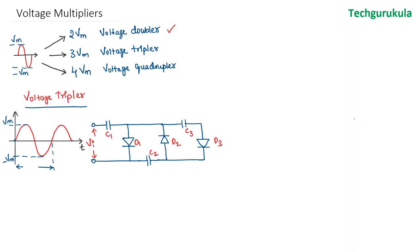Let's start with the voltage tripler, whose circuit diagram consists of 3 diodes and 3 capacitors. Its input voltage has an amplitude of Vm. As always, we assume that all the capacitors are holding no charge, which means the voltage across them will be 0 to start with.